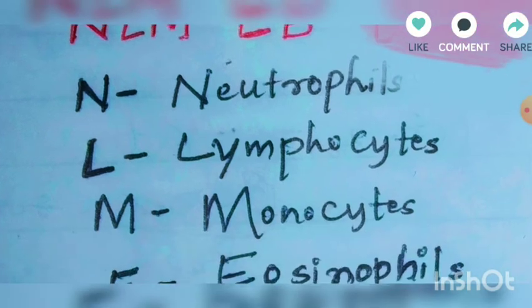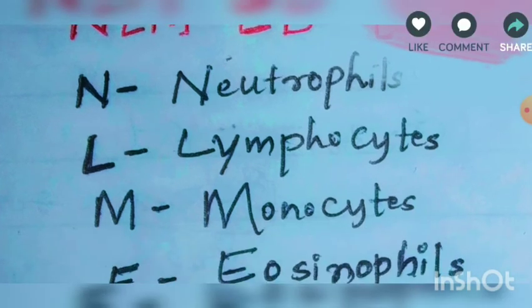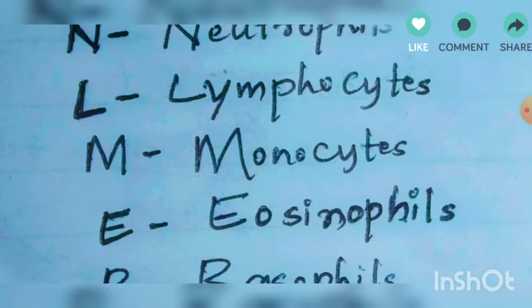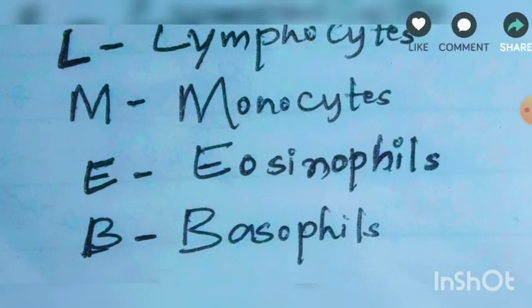To repeat: L is lymphocytes, M is monocytes, E is eosinophils, B is basophils.